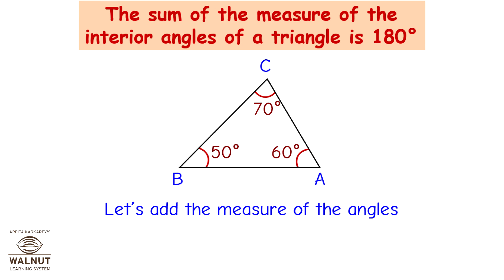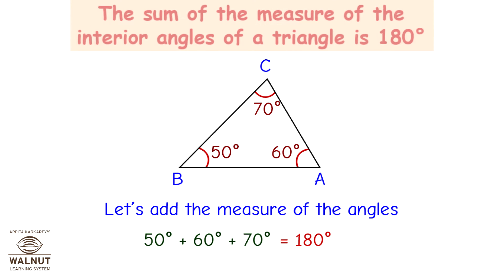Let's add the measures of the angles. 50 degrees plus 60 degrees plus 70 degrees is equal to 180 degrees.